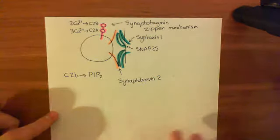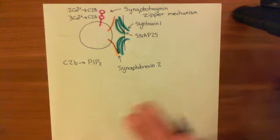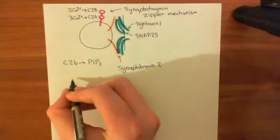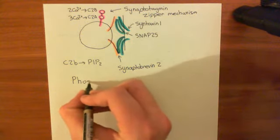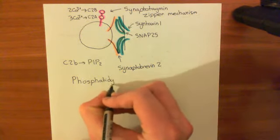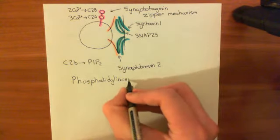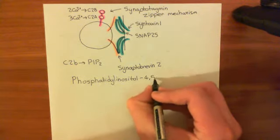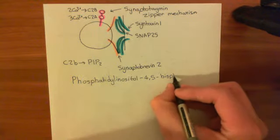I want to have a little discussion of the structure of PIP2, because it's one of these molecules that generally people have heard of — it's very important in signalling pathways in biology — but it's generally not something that people actually know what it is. Its full name is phosphatidyl inositol — the 'P' is for phosphatidyl, the 'I' is for inositol — and then 4,5-bisphosphate. This bisphosphate is the P2 on the end.